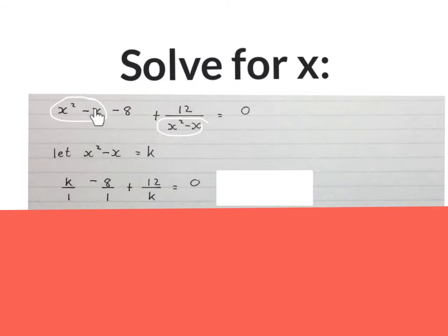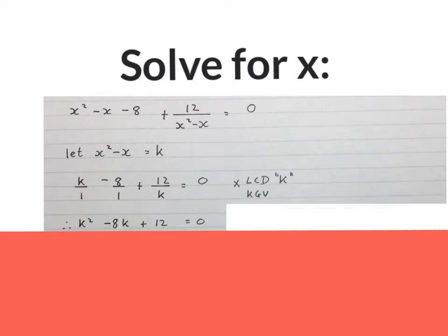Replace the x squared minus x in both places with a K. I always make everything fractions immediately. Then we times everything with a LCD, which is K. If you times K with K, you're going to get K squared. If you times this with K, you're going to get minus 8K. If you times this with K, the K will cancel, and you get plus 12 equals to 0.